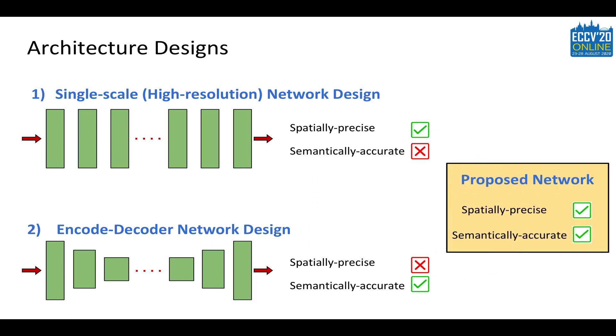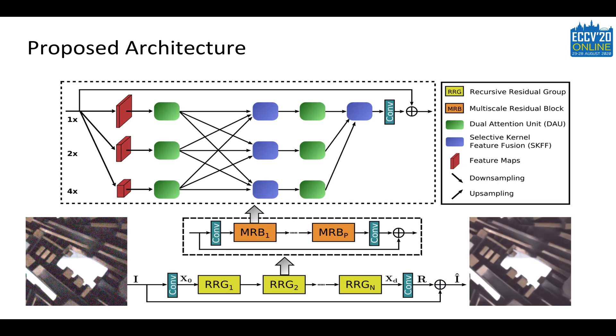We propose an architecture that exploits the best part of both worlds. Our network is based on recursive residual design that progressively breaks down the input signal in order to simplify the overall learning process and allows the construction of very deep networks.